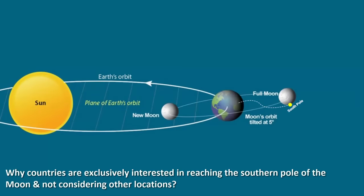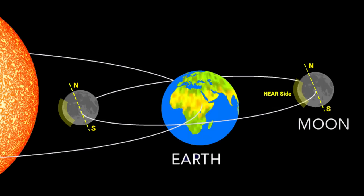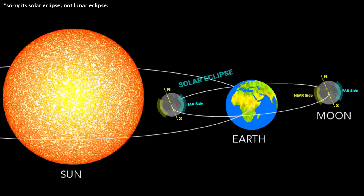Let me also tell you why countries are exclusively interested in reaching the southern pole of the Moon and not considering other locations. You have to understand that the same side of the Moon always faces the Earth. The side of the Moon that faces the Earth is called the near side, and the far side of the Moon is the side that we can never see from Earth. The only time the far side of the Moon can be seen from Earth is during a lunar eclipse, when the Moon passes between Earth and the Sun.